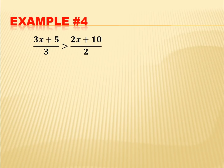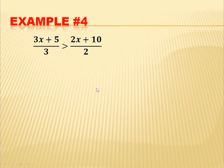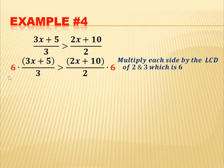Example number 4: (3x plus 5) all over 3 is greater than (2x plus 10) all over 2. In this case, we can cross-multiply: 2 times (3x plus 5) is greater than 3 times (2x plus 10), or simply multiply 6 from both sides. So 6 times (3x plus 5) all over 3 is greater than 6 times (2x plus 10) all over 2.